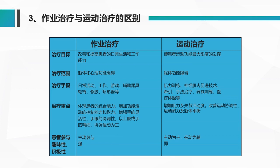在治疗重点上也不一样：作业治疗主要体现在患者的综合能力，增加功能活动控制能力和耐力，增强手的灵活性、手眼协调性，以及上肢和手的精细协调运动。而运动训练主要以增加肌力和关节活动度为主，改善运动协调性，提高运动耐力和平衡性。在趣味性和积极性上，作业治疗患者主动参与、积极性比较强；而运动训练患者参与积极性比较弱。